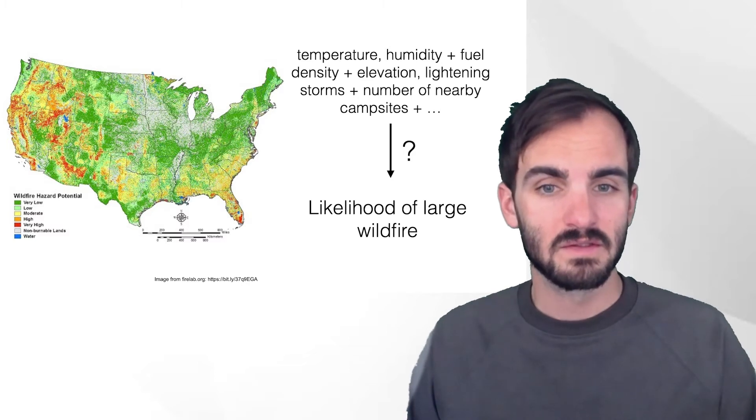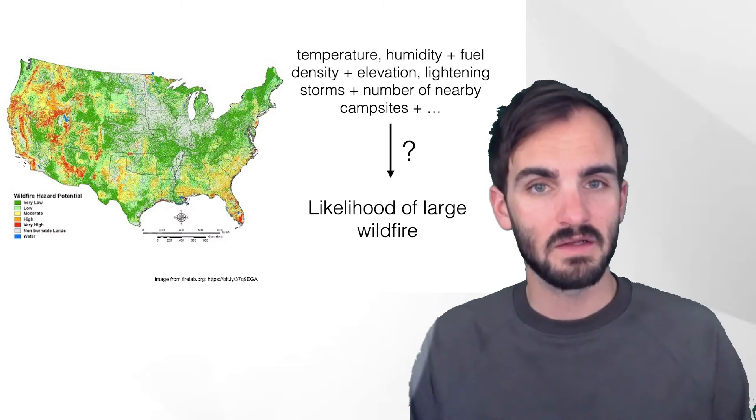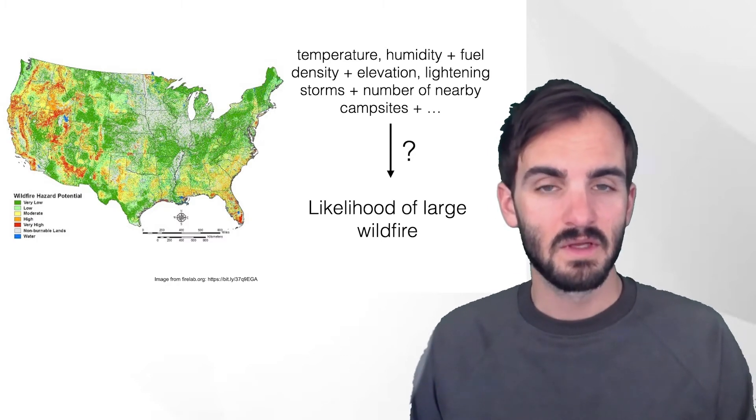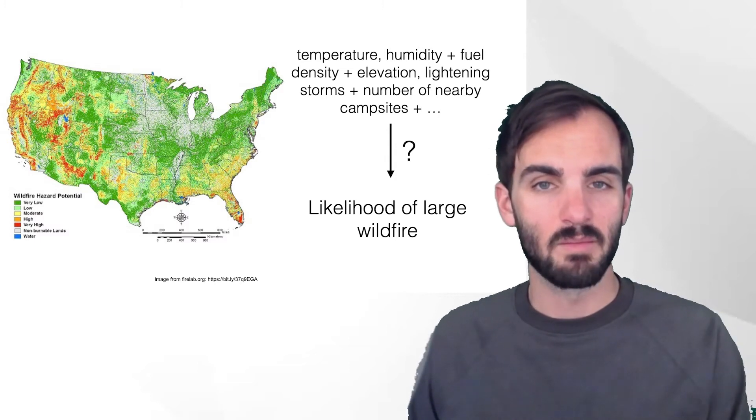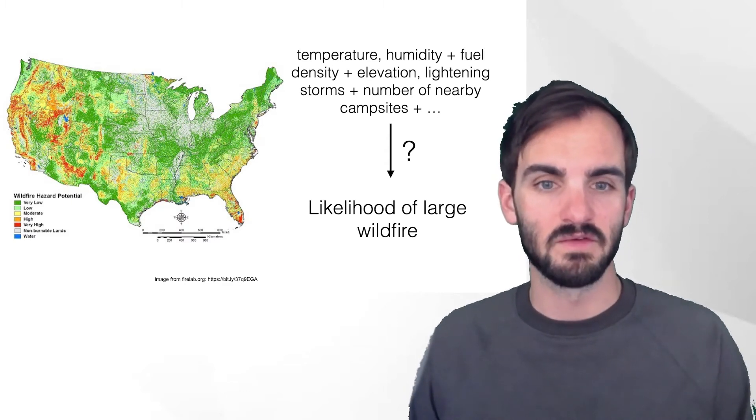Some statistical models treat those differences, 10 degree differences anywhere in that scale as the same. And other statistical models might be able to account for the fact that there are differences. Maybe wildfires become much more likely as you jump from 90 degrees to 100 degrees than if you jump from 40 degrees to 50 degrees.